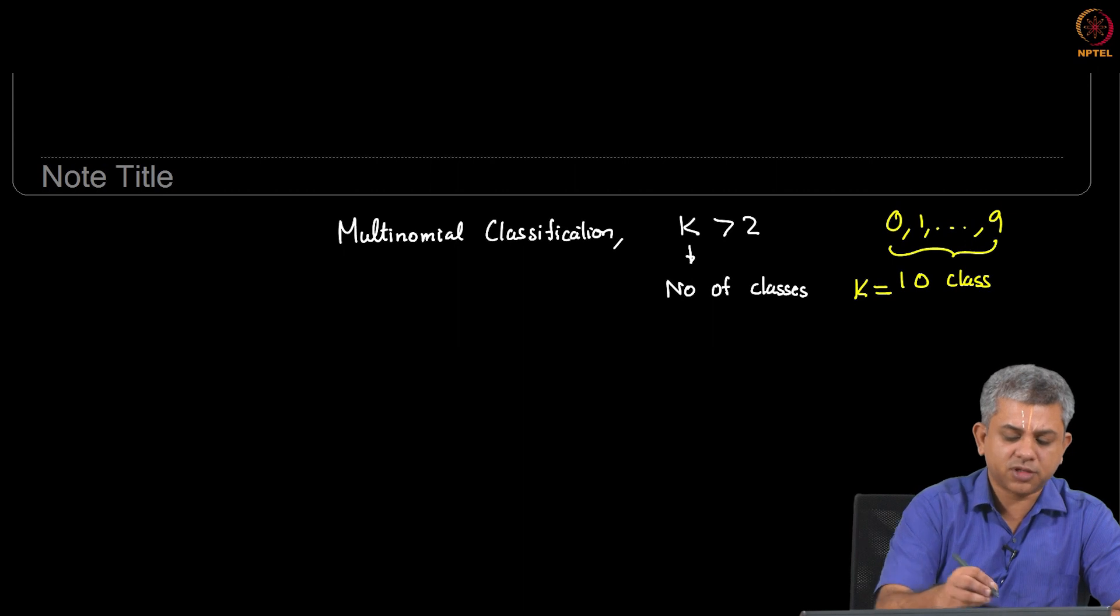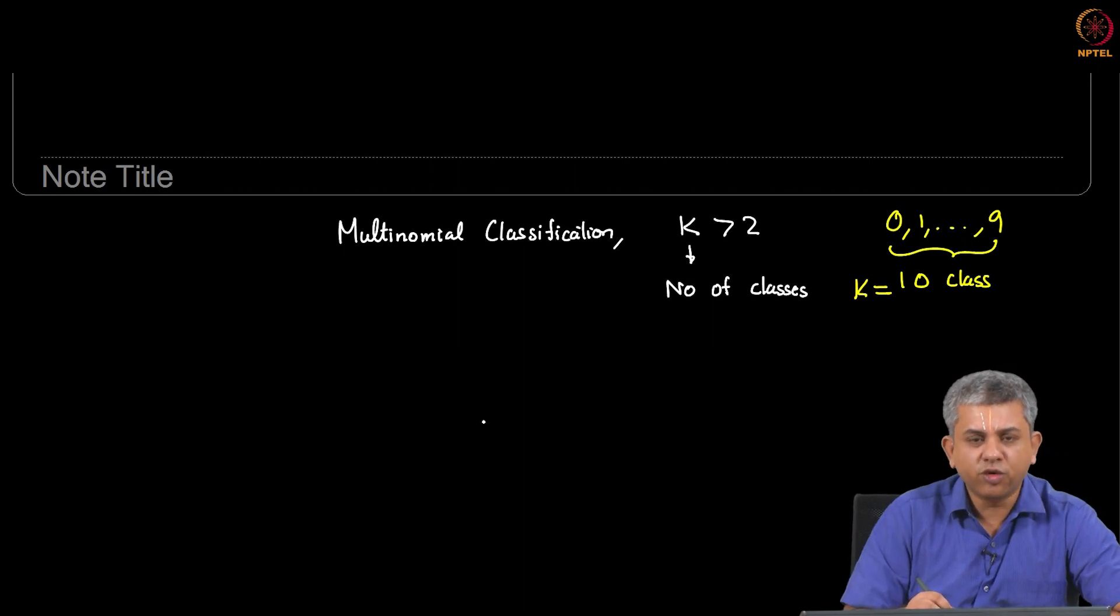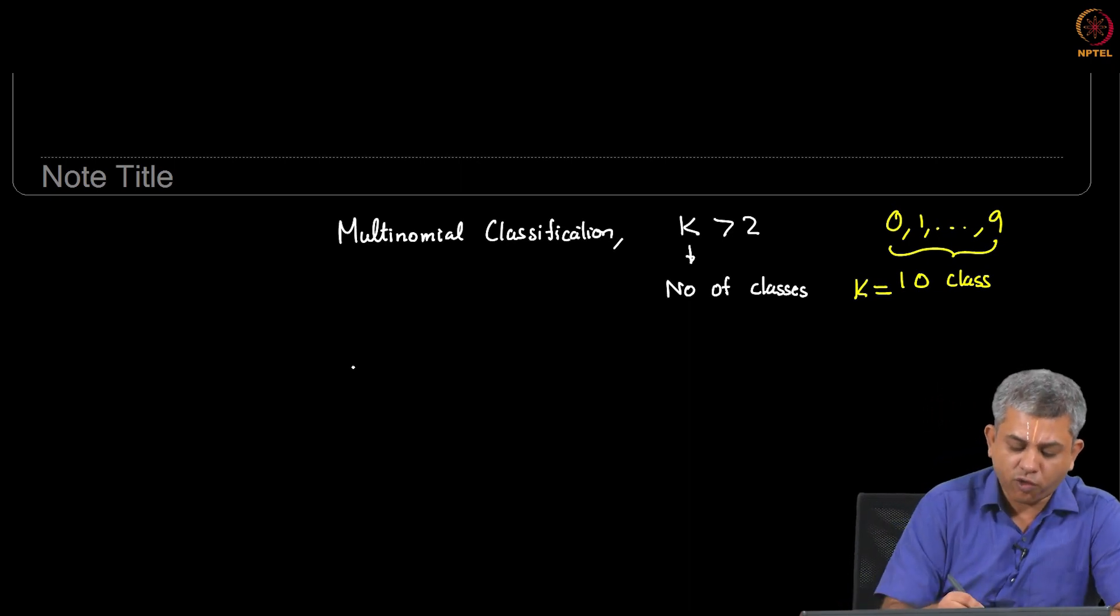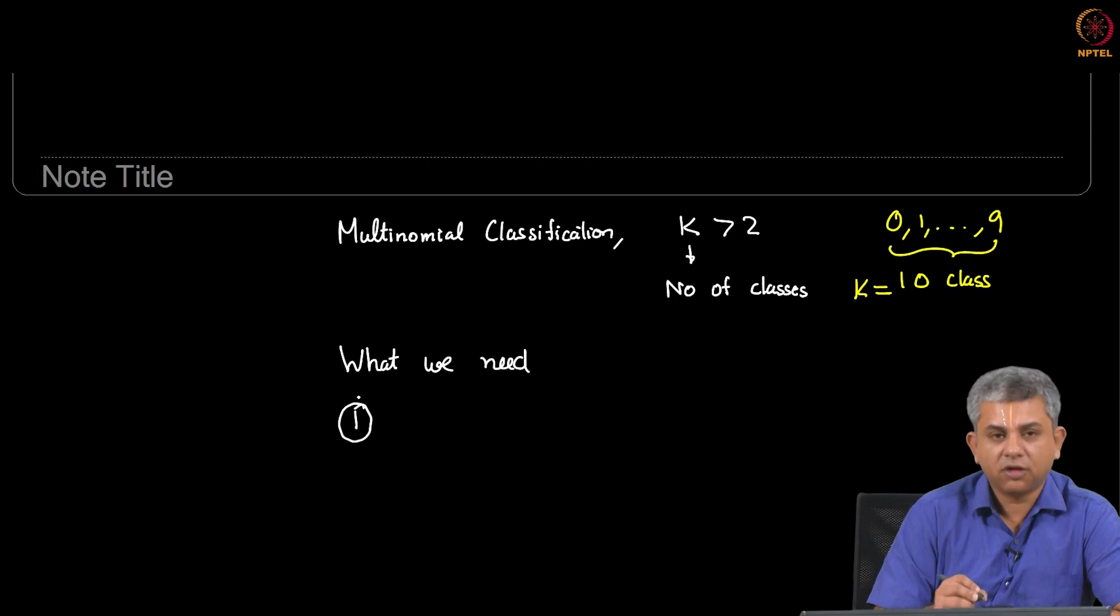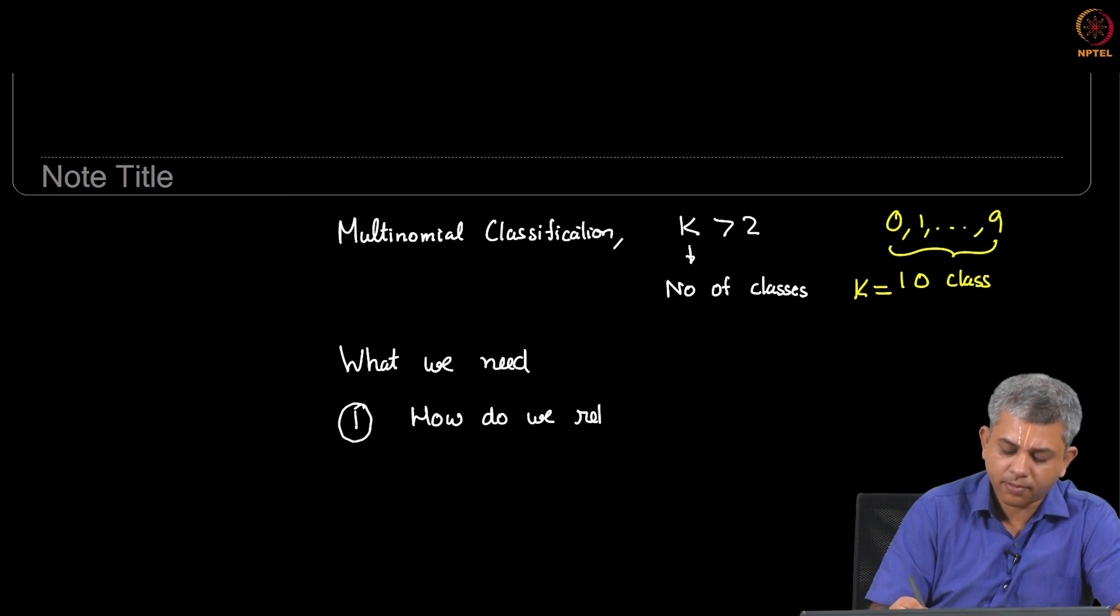So when we try to solve such problems, there are primarily a few things that we have to do over and above what we did for the binary classification problem. So what we need is the following. First, we need to know how do we represent the output class.